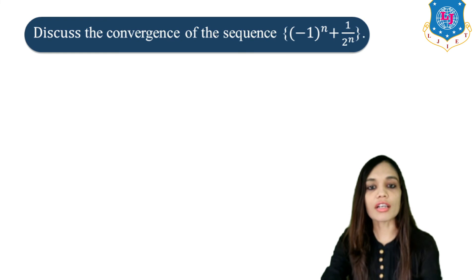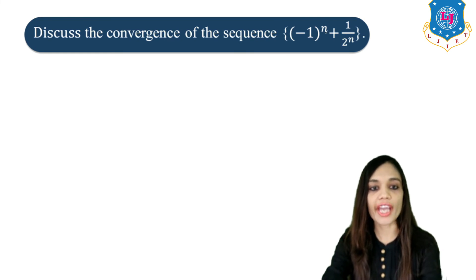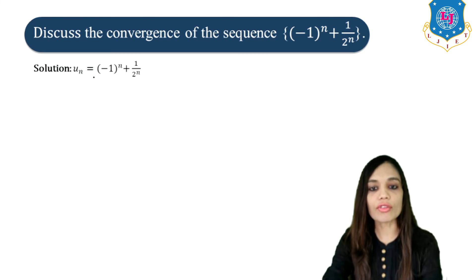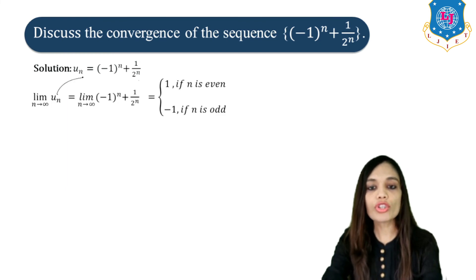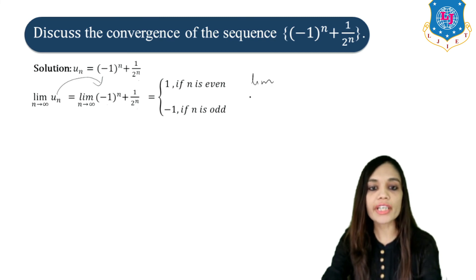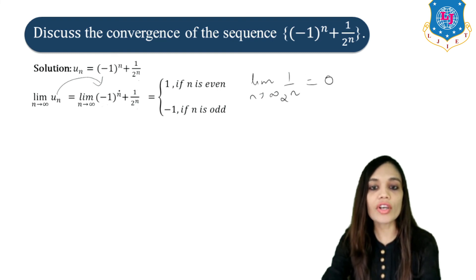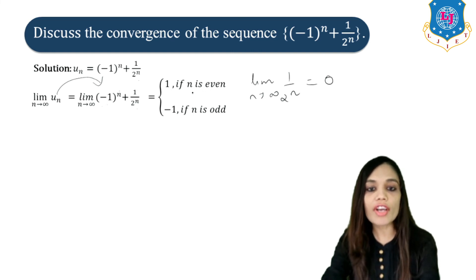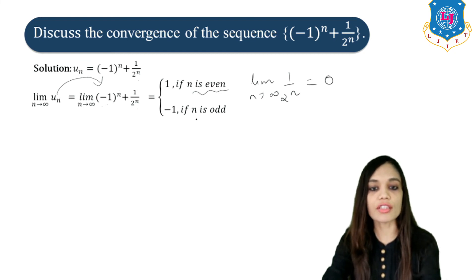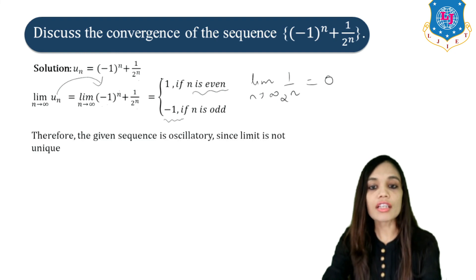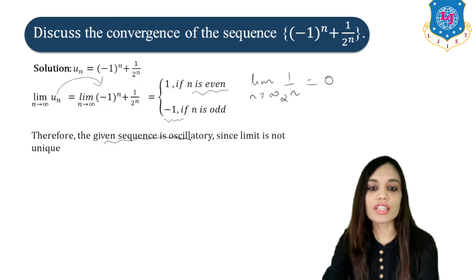Next, discuss the convergence of the sequence (−1)^{N+1} / 2^N. Here UN = (−1)^{N+1} / 2^N. Since lim(N→∞) 1/2^N = 0, what remains is (−1)^N. For even N the limit is 1, and for odd values of N (1, 3, 5, 7) the limit is −1. Therefore the limit is not unique, and the given sequence is oscillatory.